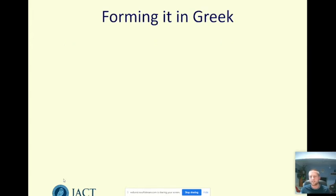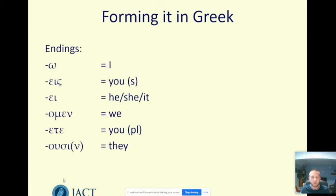So how do we do this tense in Greek? Like any tense there are six endings to show who should be doing it. Those endings are o, eis, e, omen, ete, ousi, corresponding to I, you, he, she, it, we, you, they as a subject.